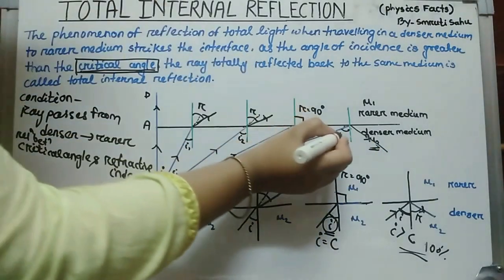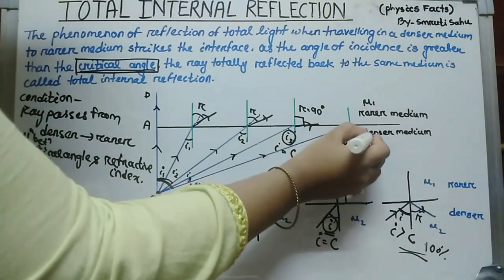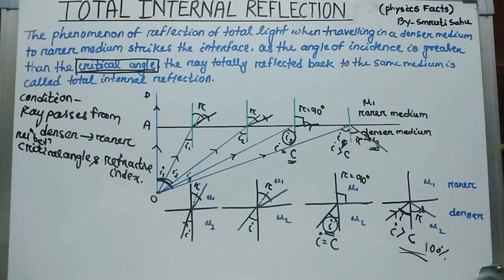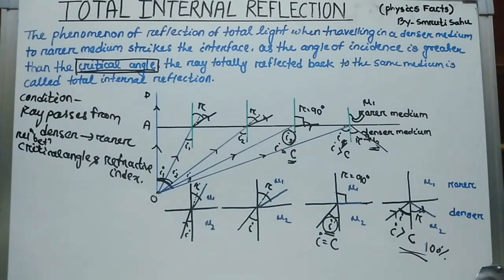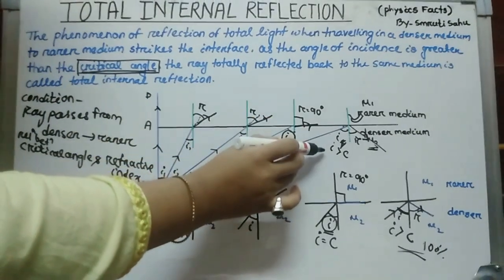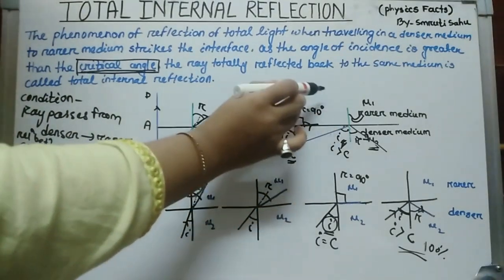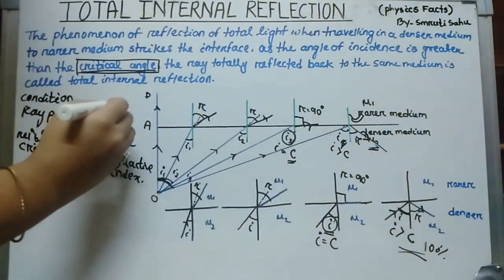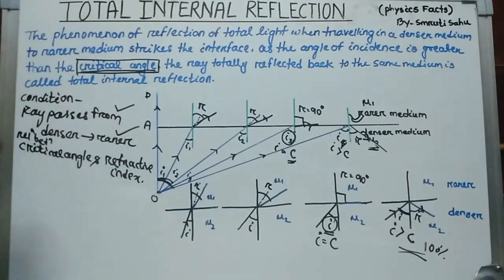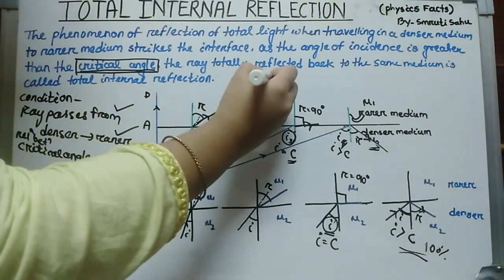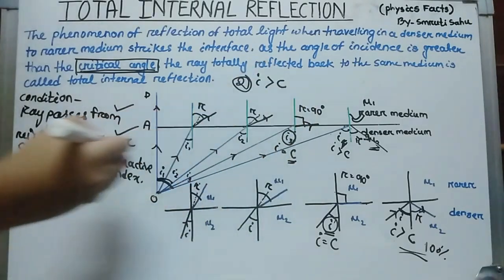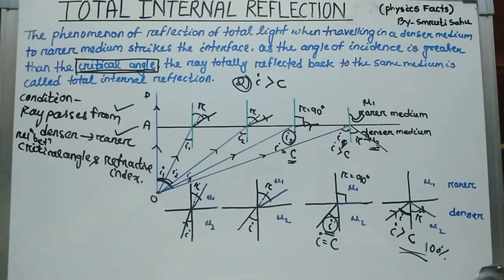The ray is totally reflected back to the same medium. So students, in total internal reflection, remember two conditions: one, the ray must pass from denser medium to rarer medium; and two, the angle of incidence must be greater than the critical angle.